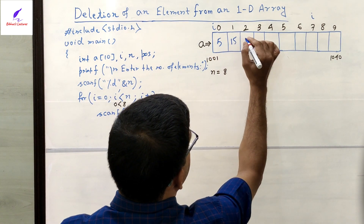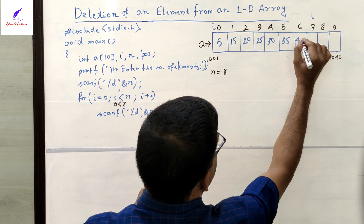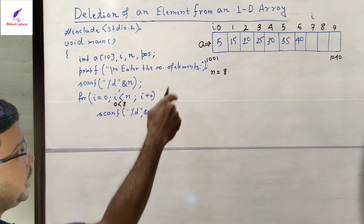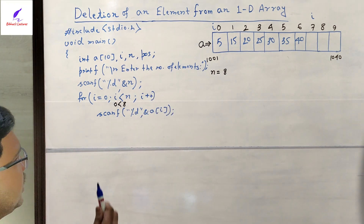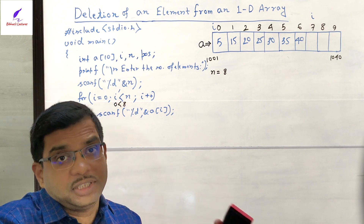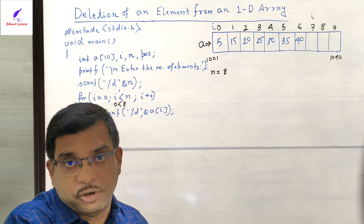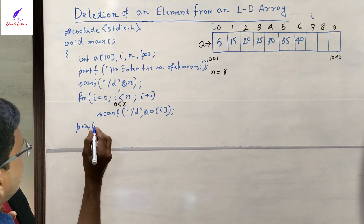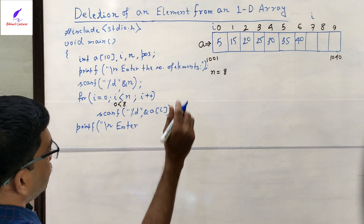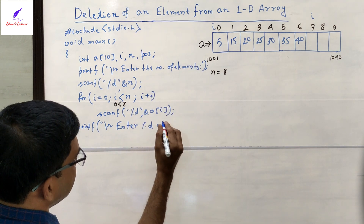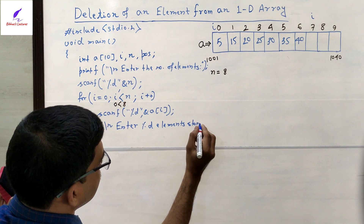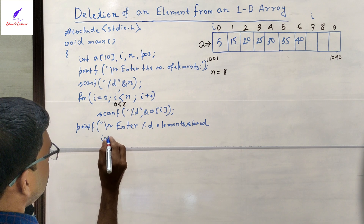Suppose the values the user scans are 5, 15, 20, 25, 30, 35, 40, 45 — these are arbitrary integer values. After inserting these elements, we print the array to verify that the 8 elements have been appropriately stored. We call printf with the message 'enter %d elements stored in the array', then execute the same for loop to print all 8 stored values.